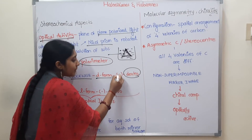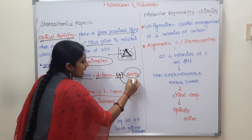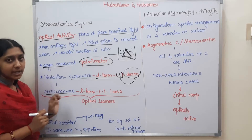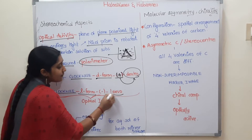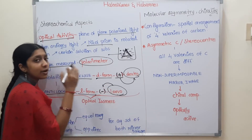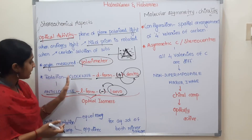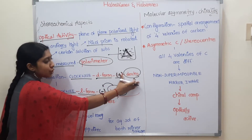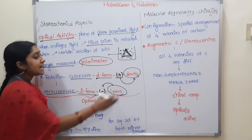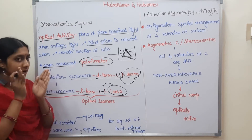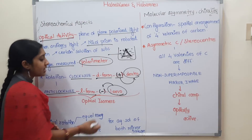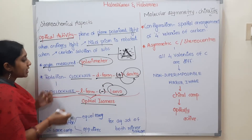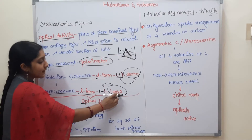A dextro compound is represented with a plus sign. Dextro means clockwise rotation. Anticlockwise direction is the L form — levo. Anticlockwise is minus and clockwise is plus. So rotation clockwise is dextro (+), and anticlockwise rotation is levo (−). Dextro and levo are isomers — they have the same structure, so they are optical isomers.